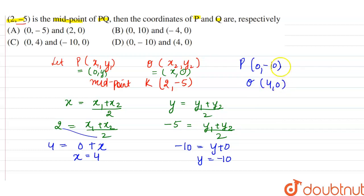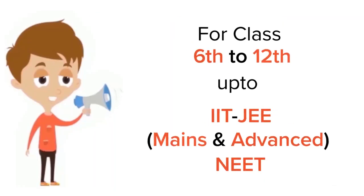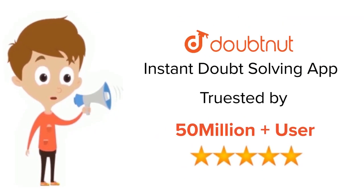From the options, P = (0, -10) and Q = (4, 0), so the correct option is option D. For class 6 to 12, IIT-JEE and NEET level — trusted by more than 5 crore students. Download DoubtNet today.